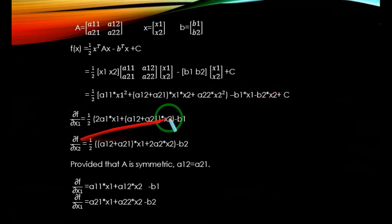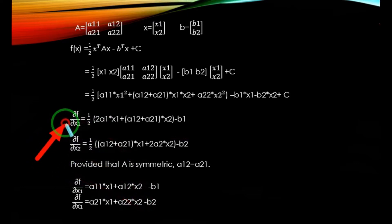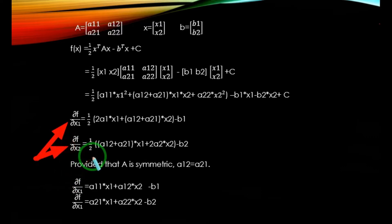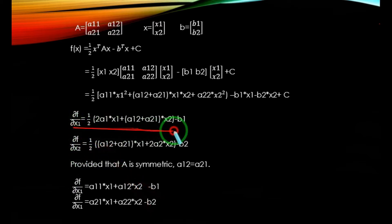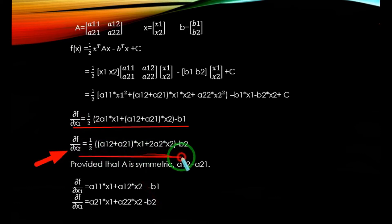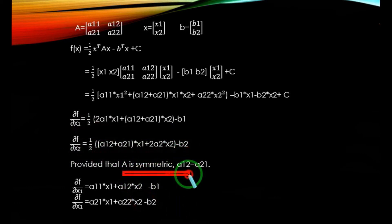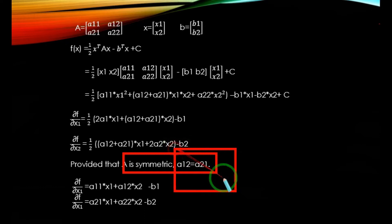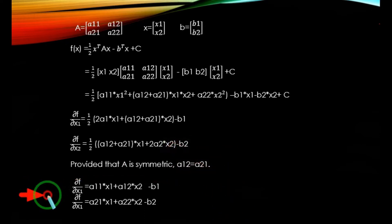Now, what is extremization? We mentioned earlier that it is simply finding the gradient of a function. In order to find the gradient of our given function f(x), we simply differentiate it with respect to the unknown variables. Taking x1 first, differentiating f with respect to x1, we get the following equation. Similarly, differentiating f with respect to x2, we get the following output. Now, provided that A is a symmetric matrix, A12 = A21, that is Aij = Aji. Using this condition and the previously found equations, we get the following output.